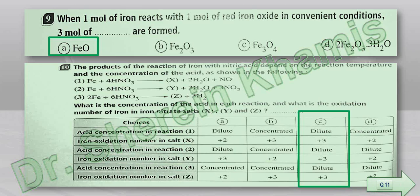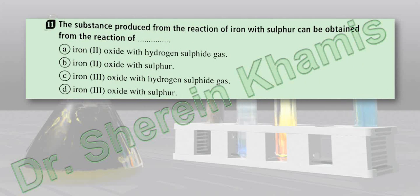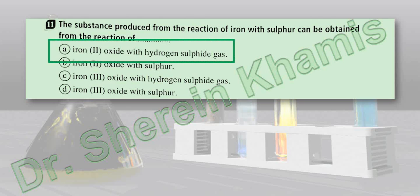Question number 11 says that the substance produced from the reaction of iron with sulfur can be obtained from the reaction of: iron(II) oxide with hydrogen sulfide gas, iron(II) oxide with sulfur, iron(III) oxide with hydrogen sulfide gas, or iron(III) oxide with sulfur. When iron reacts with sulfur, hydrogen sulfide gas evolves with a pungent smell and iron(II) oxide is formed.